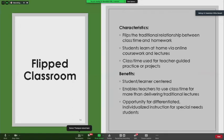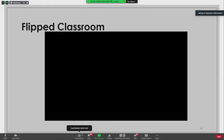The flipped classroom is another popular model for use, particularly at the high school level, but it is showing up at the elementary level as well. This model flips the traditional relationship between class time and homework. Students learn at home via some online coursework and lectures, but the class time is used for teacher guided practice and projects. It's learner centered. Once again, it enables teachers to use class time for more than delivering traditional lectures. And there's an opportunity for individualized differentiated instruction, again, for students who have special needs. So this video shows the flip model in action at Clintondale High School in Clintondale was low performing, but now it's one of the top 50 blended learning high schools in the United States. Let's take a look.